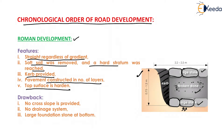Now the drawbacks of Roman development. The first drawback is that no cross slope is provided. If no cross slope is provided to any layer, there will be drainage problems at each layer — all layers are straight with no cross slope. Drainage is therefore one of the main problems in Roman development. The next drawback is no drainage system. Without a drainage system, water coming in the rainy season penetrates deep inside the road and deteriorates its quality.